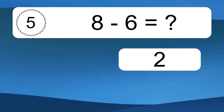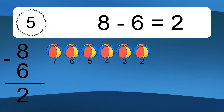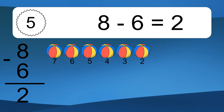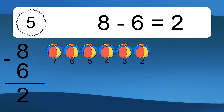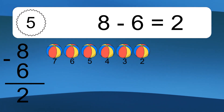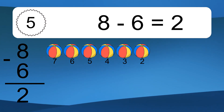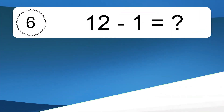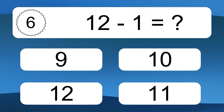8 minus 6 equals what? 8 minus 6 equals 2. Let's count it: 7, 6, 5, 4, 3, 2.